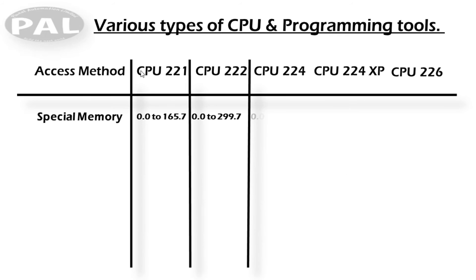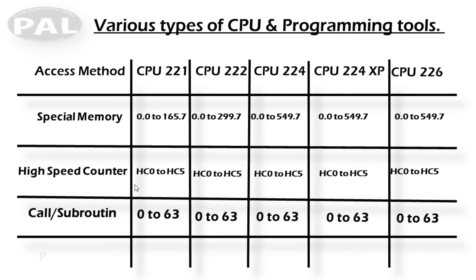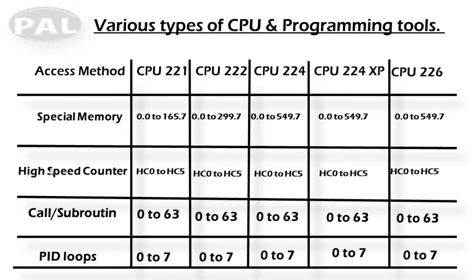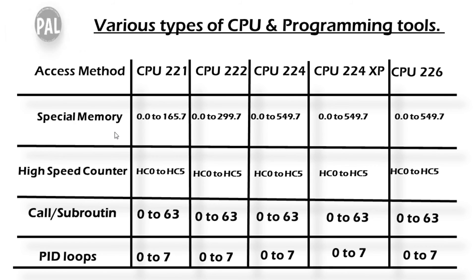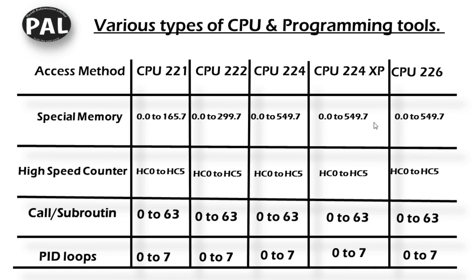Next topic: various types of CPU and programming tool access methods for the S7-200 PLC. The key access method features include special memory, high-speed counters, subroutines, and PID loops. Special memory addressing is SM0.0 to SM165.7. For CPU 224, it extends to SM0.0 to SM549.7. For CPU 224XP and 226, it's the same SM0.0 to SM549.7 — a huge number of special memory bits used in programming.